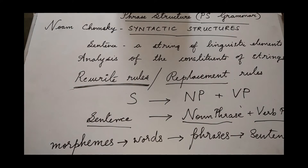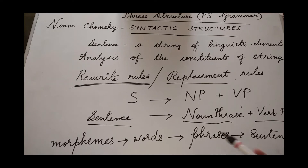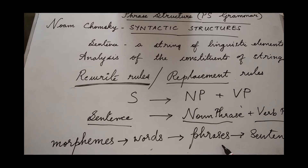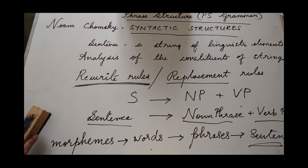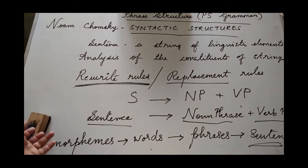Using these rewrite rules, you can understand how morphemes combine together to form words, and words combine together to form phrases, and finally how sentences are constituted by a combination of all these. So it is a step-by-step analysis. If you represent the phrase structure grammar analysis of a sentence in a pictorial way, it looks like a tree — a tree diagram.